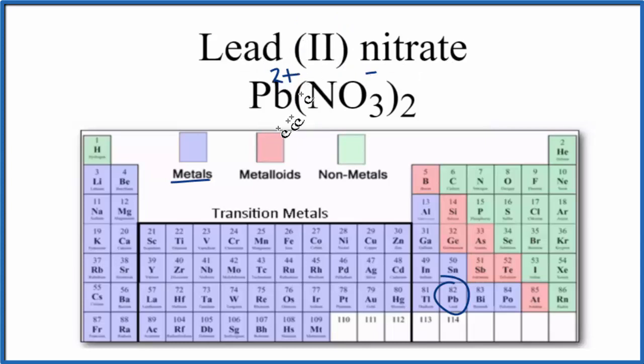Now we have the lead two ion, this positive ion here, and these two nitrate ions which are negative. Opposite charges attract, and that's what forms the ionic bond in Pb(NO3)2.